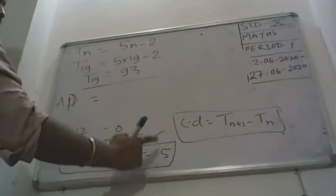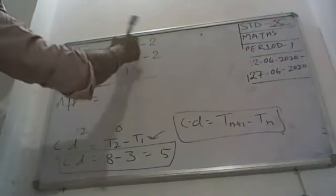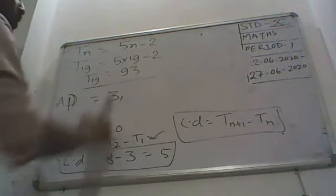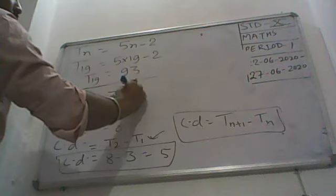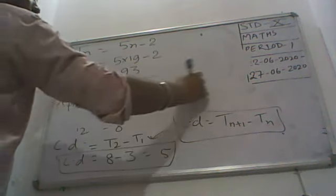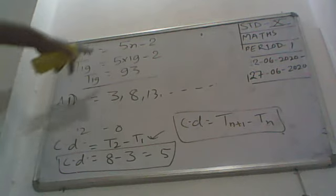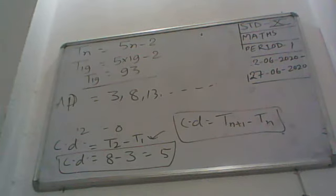So your AP will be, first term is 5 minus 2, 3, then there is second term is 5 plus 2 minus 2, 8, then 13. Like this it will go on continue and your 19th term will be 93 only. So this is your AP here. So this we have learned from the beginning only. Class, I hope you will understand this and you will try to solve this at your home also. If you face any problem, one more question I can solve here.